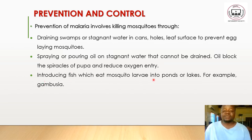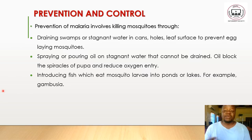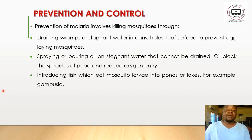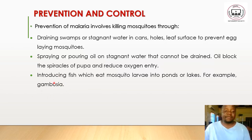Introducing fish that eat mosquito larvae into ponds or lakes also helps, because areas with ponds are malaria-prone zones. Fish will eat the larvae of mosquitoes, breaking the mosquito life cycle and preventing malaria. For example, gambusia is a fish species that feeds on mosquito larvae.